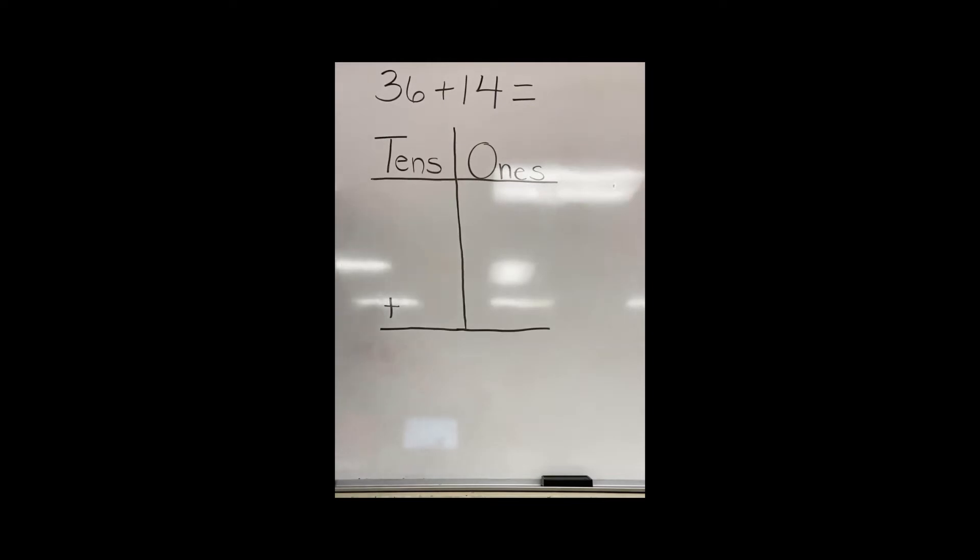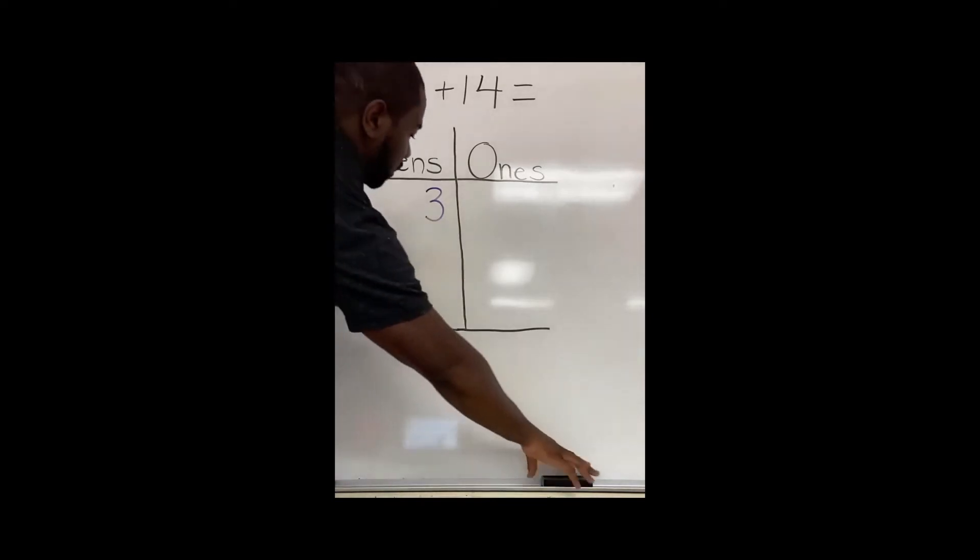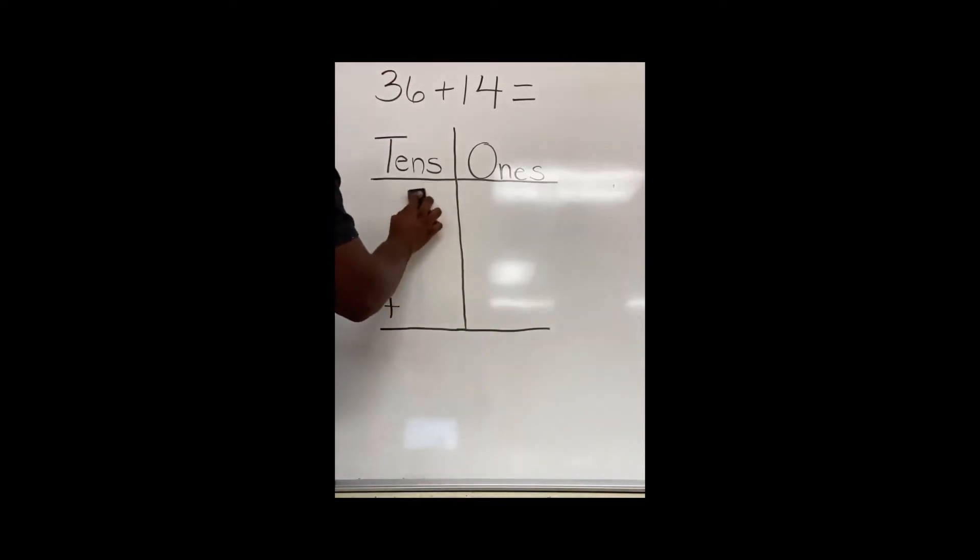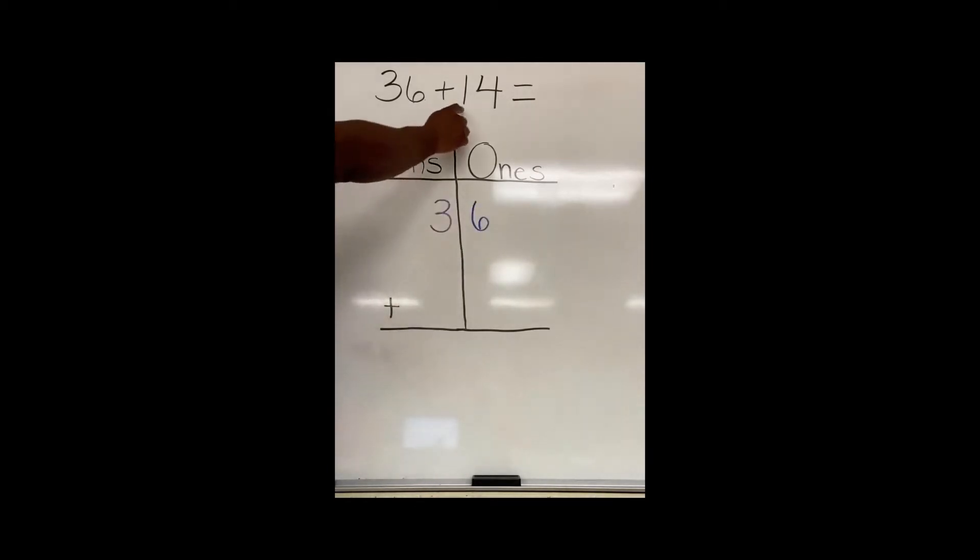The first thing I want to do, I want to make sure that when I write my number that I place my tens place in the tens place and my ones place in the ones place. So 36 has three tens, and six ones. 14 has one ten and four ones.